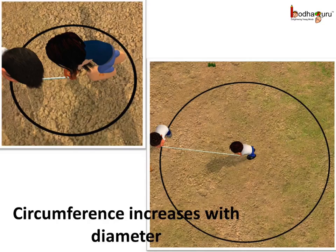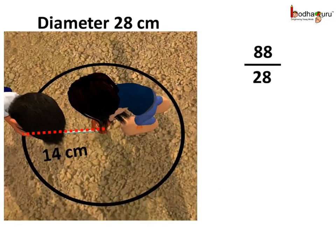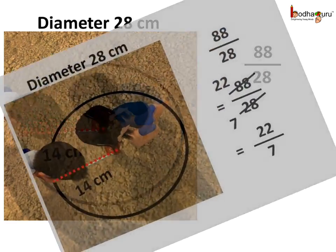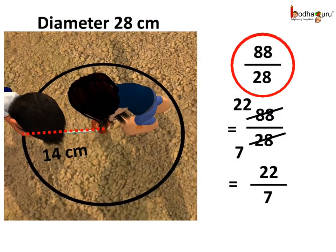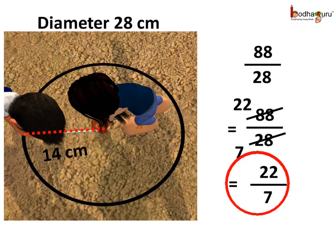Let's find that relation. In the first case, the circumference was 88 cm and the diameter was 28 cm. Let's find the ratio of 88 and 28. They are divisible by 4 — 4 sevens are 28, and 4 twenty-twos are 88. So we get 22 by 7.